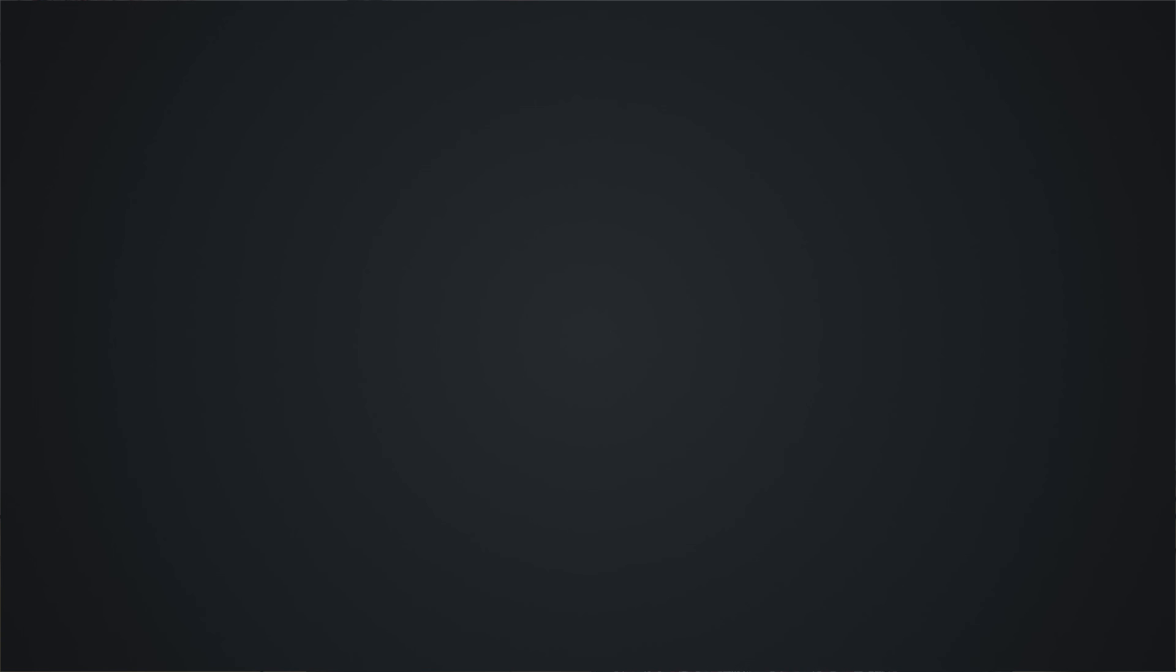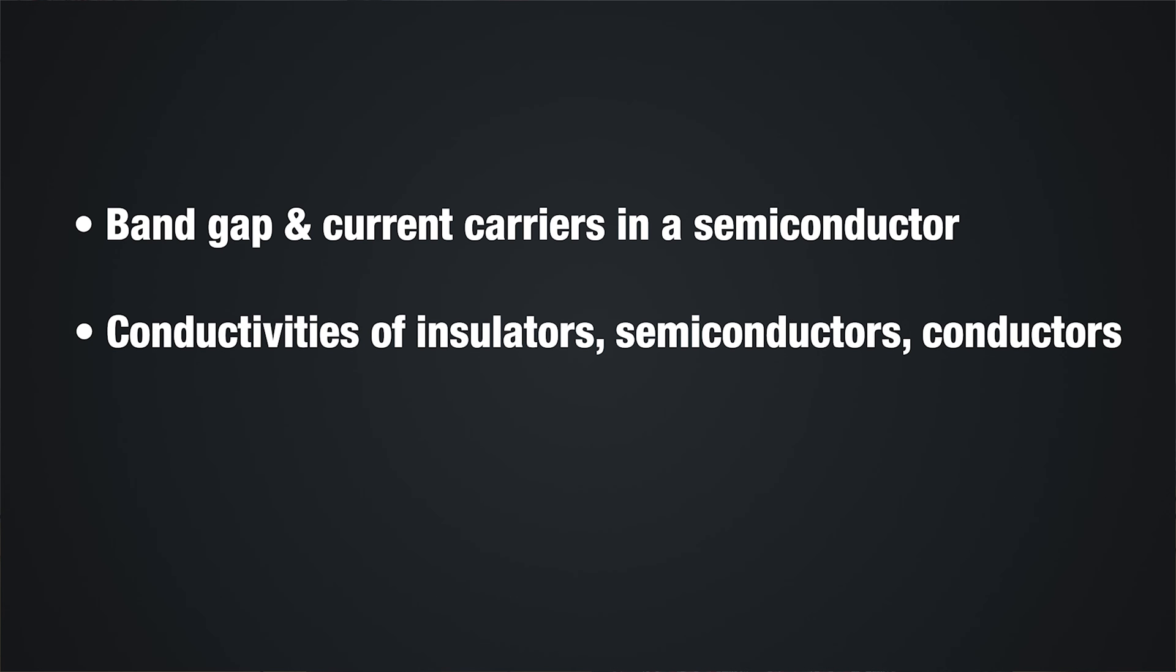In this video, we learned about band gap and the current carriers in a semiconductor. We examined the energy diagram of the three types of materials used in electronics: insulators, semiconductors, and conductors, and briefly discussed their conductivities.